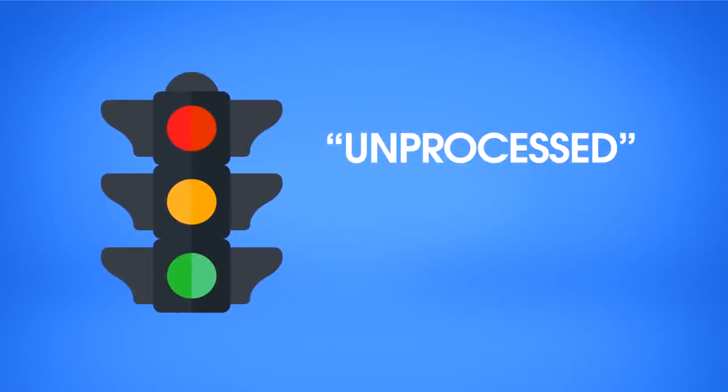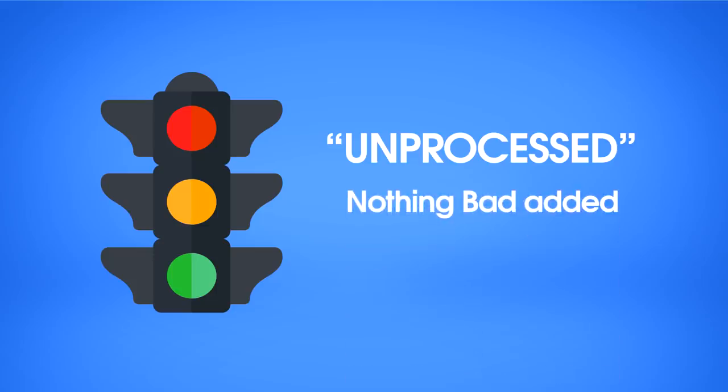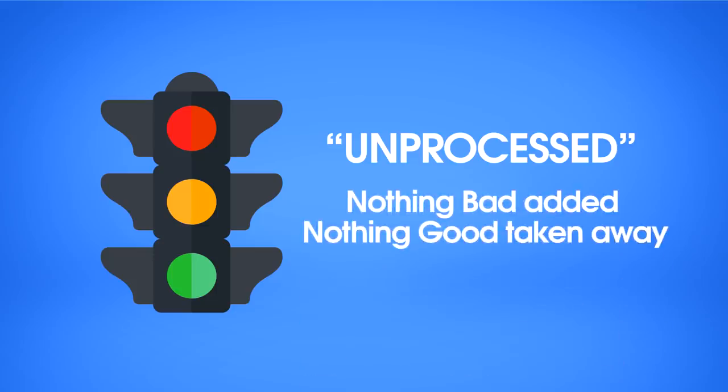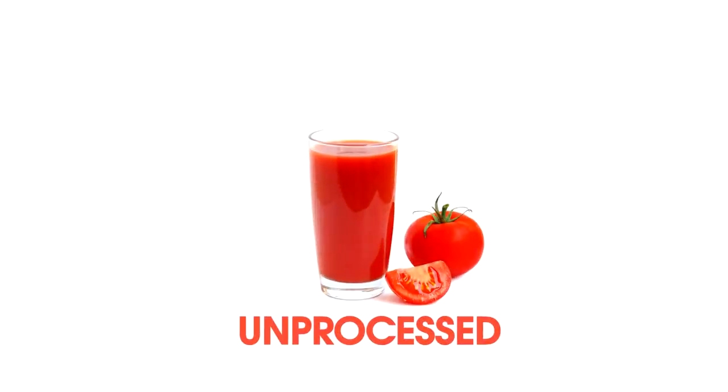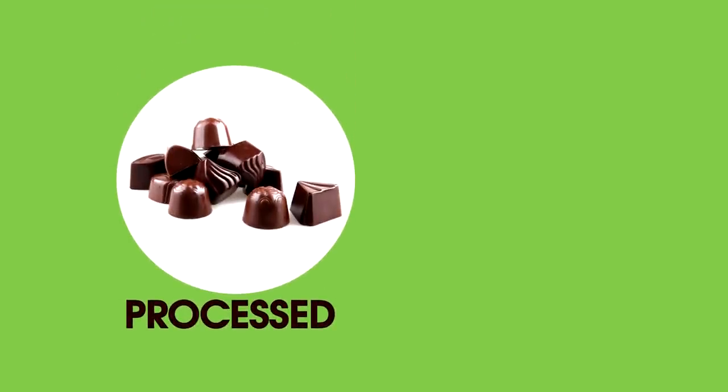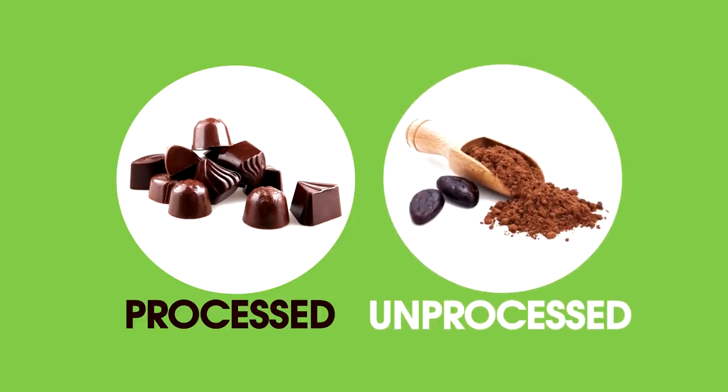So for the purposes of the traffic light model, I like to think of unprocessed as nothing bad added, nothing good taken away. In the above example, tomato juice could be thought of as relatively unprocessed, since even much of the fiber is retained, unless salt is added, which would make it a processed food in my book and bump it out of the green zone. Similarly, I would consider chocolate processed since they add sugar, but cocoa powder not.